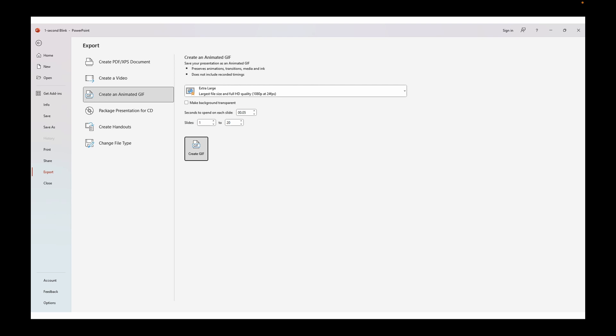And then there should be only 50 milliseconds to spend on each slide. In other words, 0.05 seconds, 5% of a second and then click create GIF.